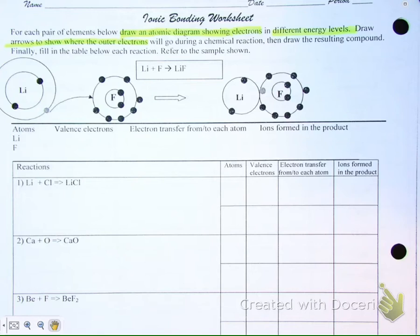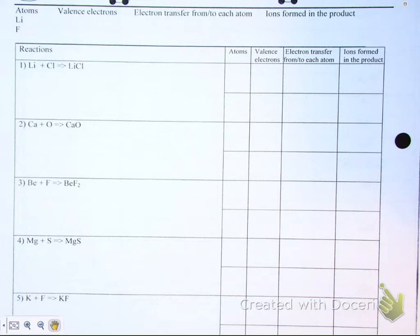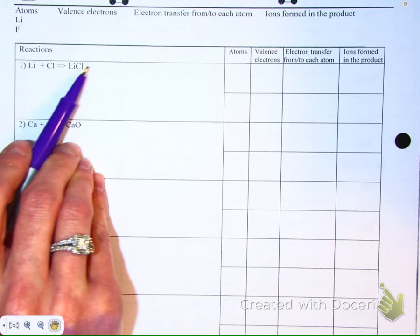And I will tell you, we're going to follow the directions to a T on the first one, and then I'm going to show you an easier way to do it. So let's look at the first one, number one. We have two elements listed, lithium and chlorine. And you'll see here, it has a little arrow. And then it shows you the resulting chemical formula. When I ask you to write a chemical formula, this is what I'm referring to.